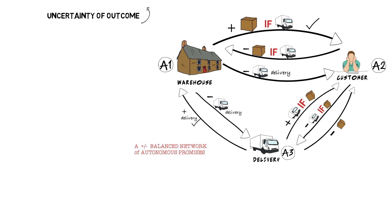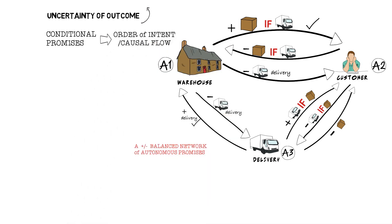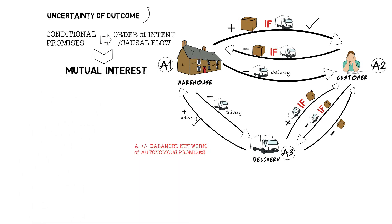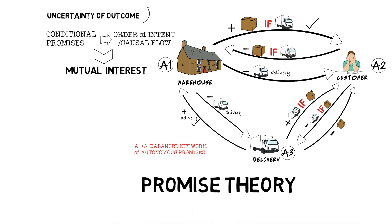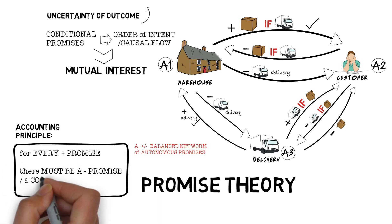The conditional promises from warehouse to customer promise the order of intent, or causal flow. The promises between warehouse and go-between, and go-between and customer, bind the two by mutual interest. A chemist might call this a directed covalent bond, but promise theory shows us a simple accounting principle: for every plus promise, there must be a minus promise, or a condition to delegate.